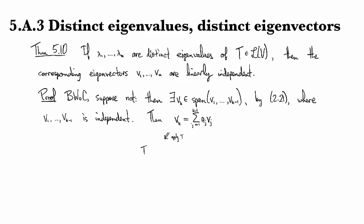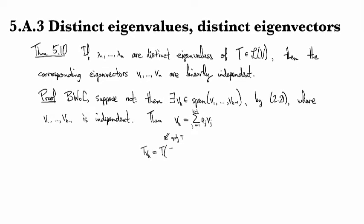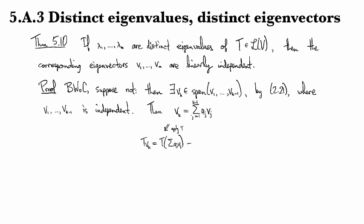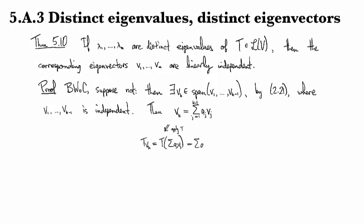And I get T(v_k) equals T of the sum, which by linearity becomes the sum a_j T(v_j).